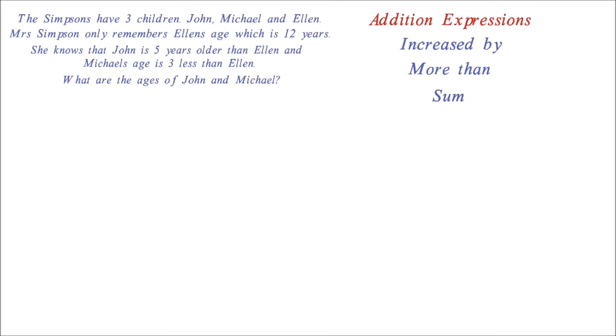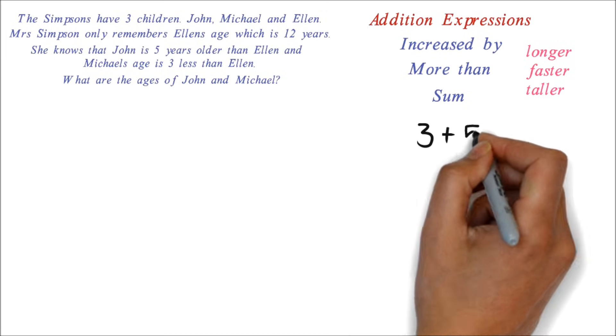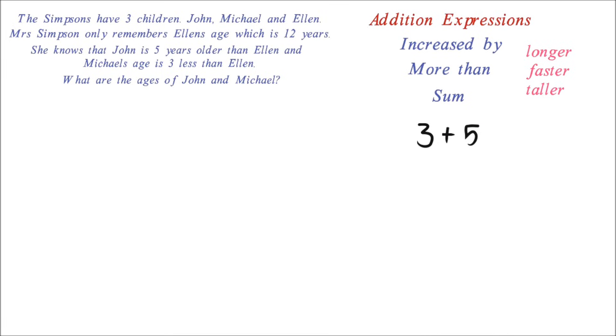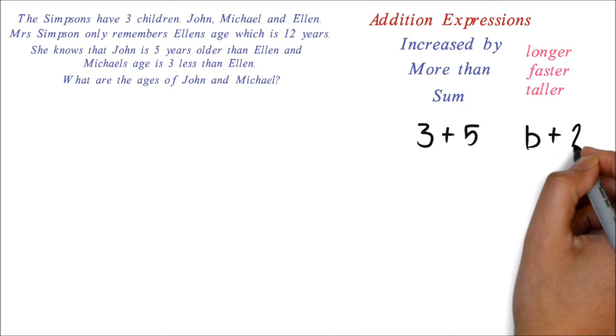4. Comparative words that denote more than, longer, faster, taller, and so on. Example: the expression 3 increased by 5 can be written as 3 plus 5. The expression 2 years older than B can be written as B plus 2.